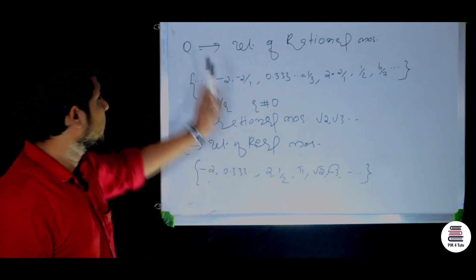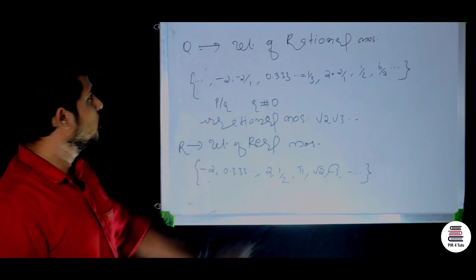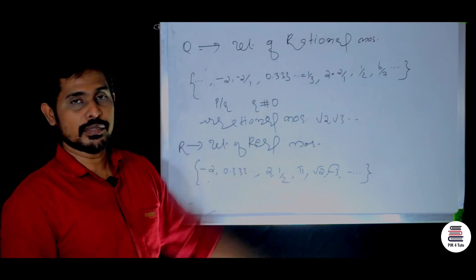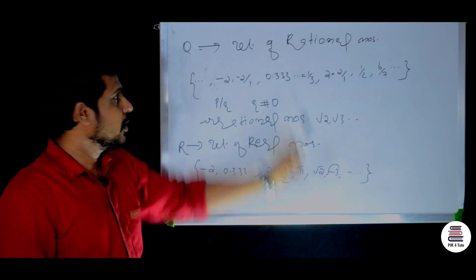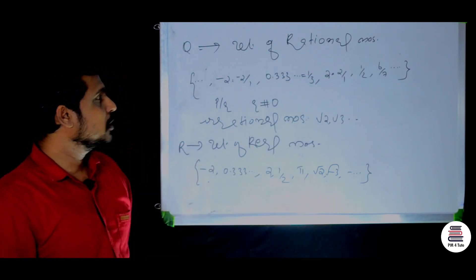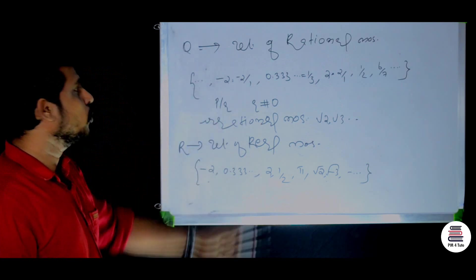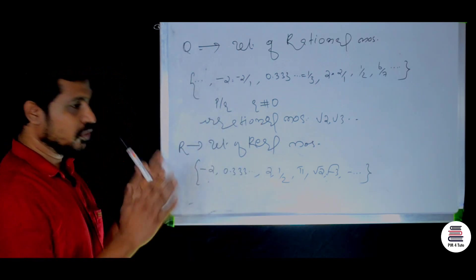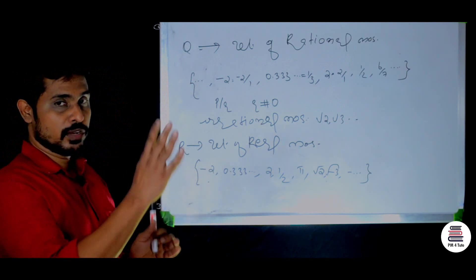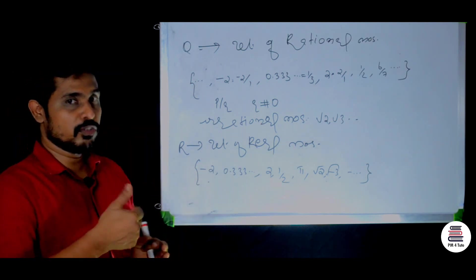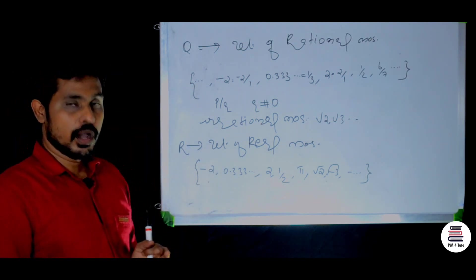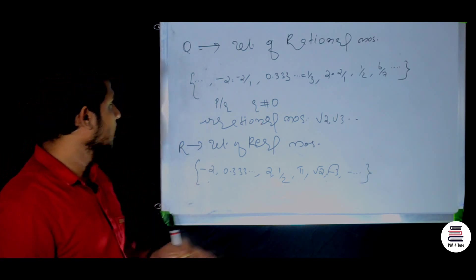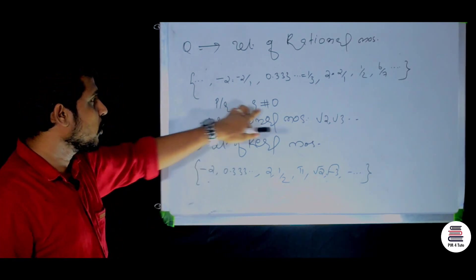Next, capital N — set of all natural numbers. Natural numbers are positive counting numbers without zero: 1, 2, 3... That is the set of natural numbers, denoted by capital N. Next, capital Q — set of rational numbers.